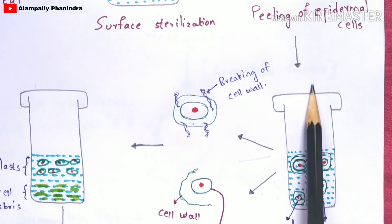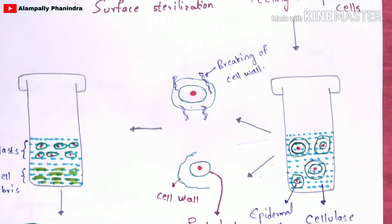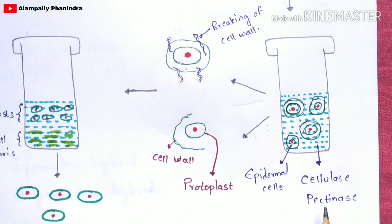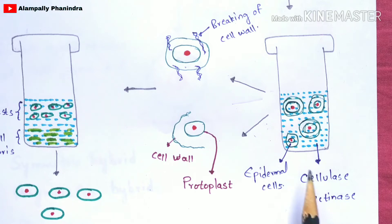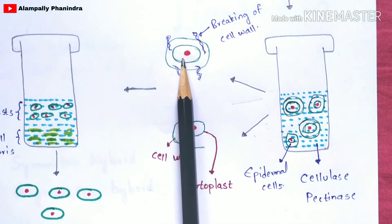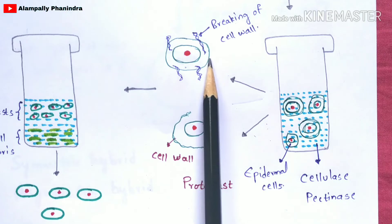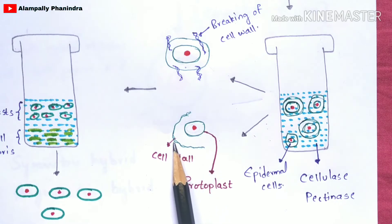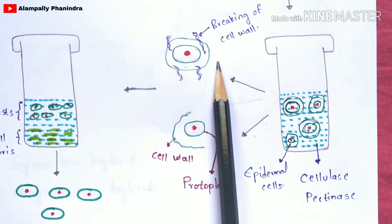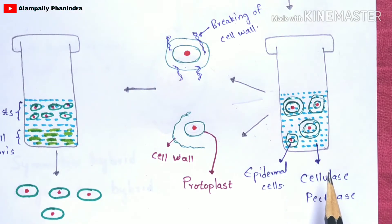You keep the epidermal cells in the solution containing cellulase and pectinase enzymes. When the epidermal cells are added to this enzyme solution, the cellulase and pectinase play a major role in cleaving the cell wall. Once the cell wall is cleaved, only the protoplasm remains — the cell wall is removed through lysis by these enzymes.